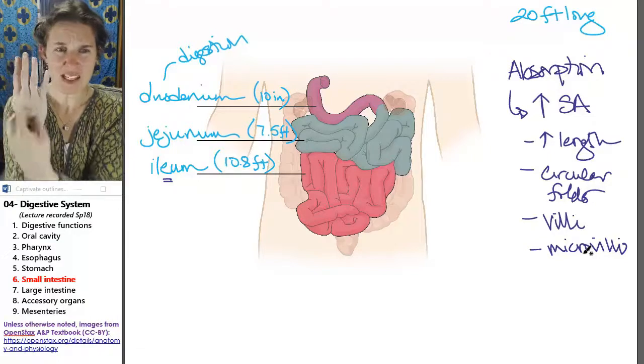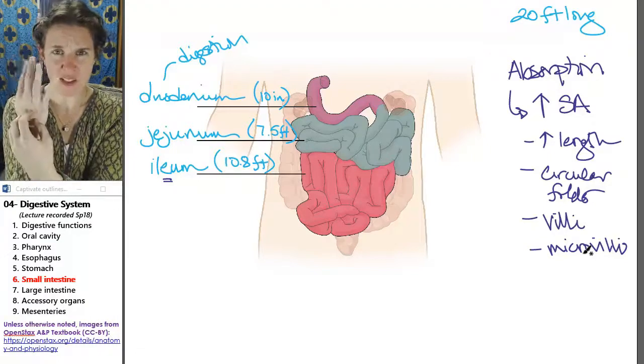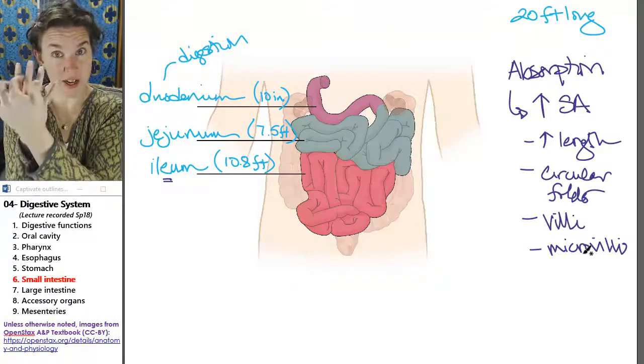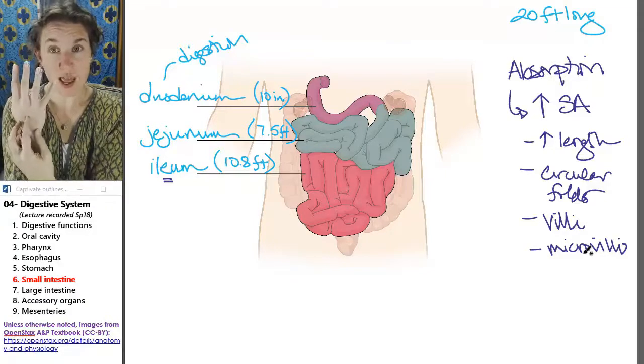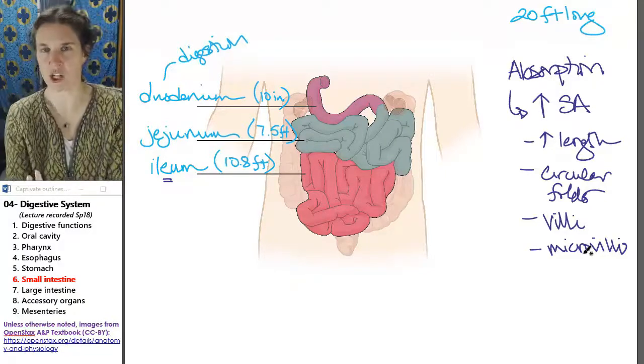So you have, like, a cell with projections, which increases the surface area for absorption. And then those cells make up these projections.